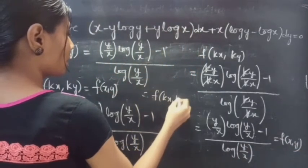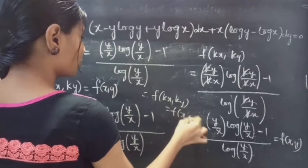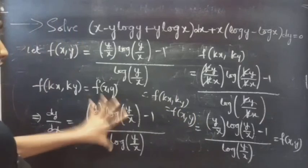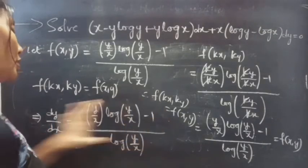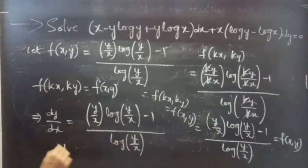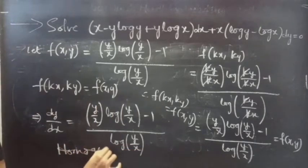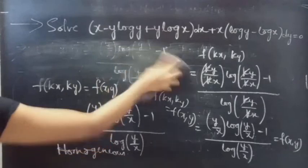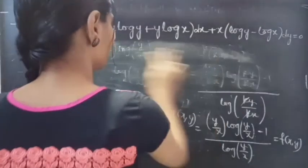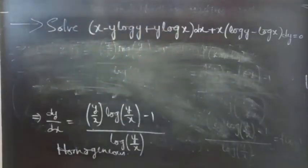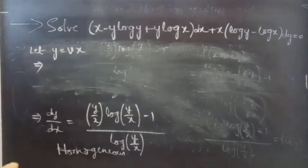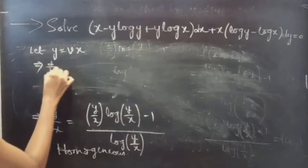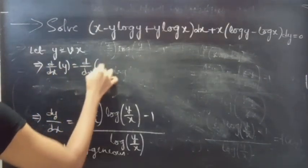Therefore, f of kx, ky equals to f of x, y. So we can say that this function is homogeneous, and therefore the given differential equation is homogeneous. Now we will solve this homogeneous differential equation. Let y equals to vx. Differentiate both sides with respect to x. Then dy/dx equals to d/dx of vx.